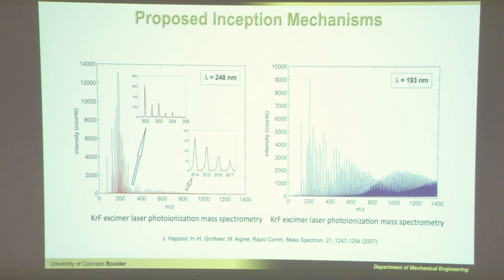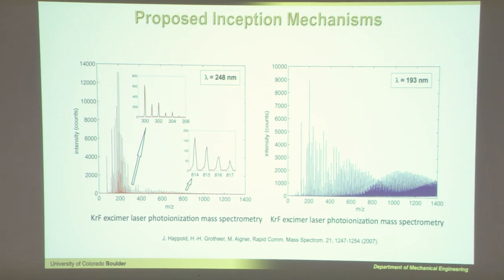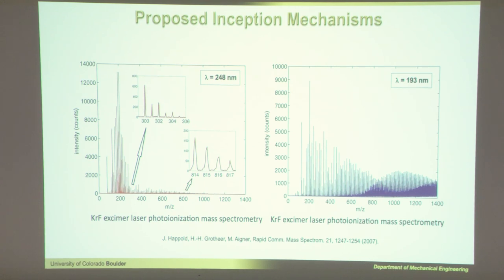The same group found that ionizing at 248 nm shows what you normally see in an aerosol mass spectrum or laser desorption ionization mass spectrum. But if you ionize at a shorter wavelength — where you might be more able to ionize the particle — you actually see these larger masses, as if you're seeing the entire particle. It would be really cool to have these data at different heights in the flame, but they didn't seem to do that measurement.